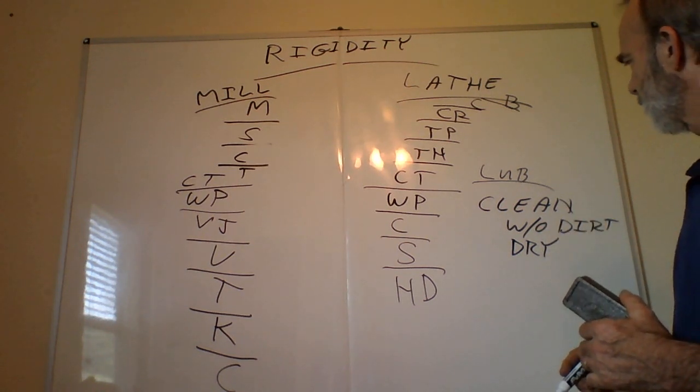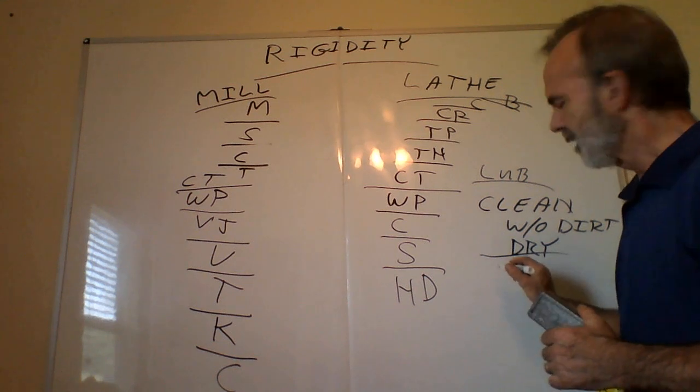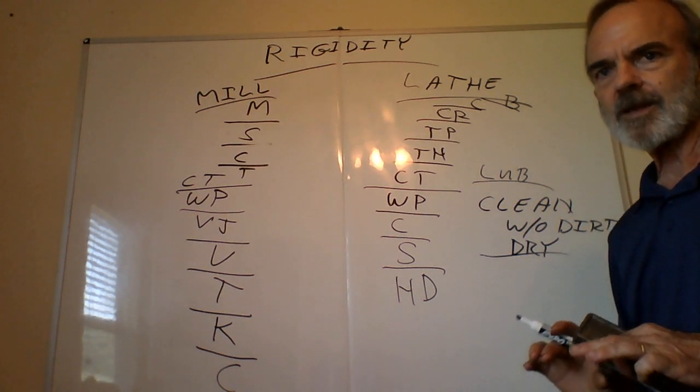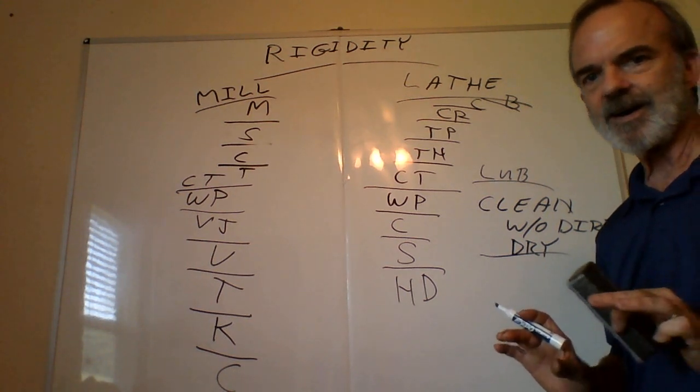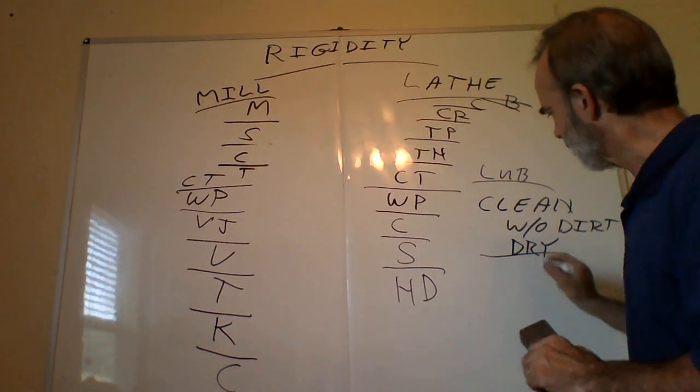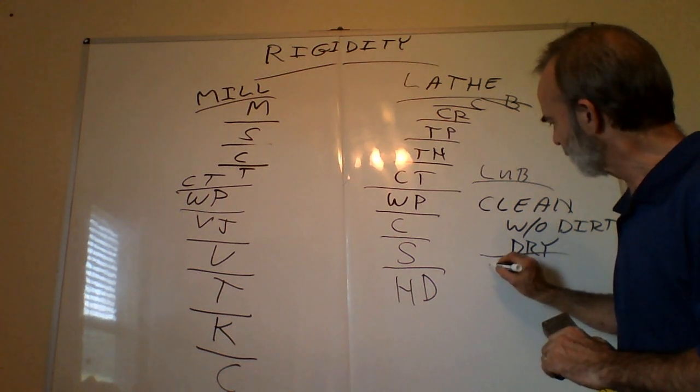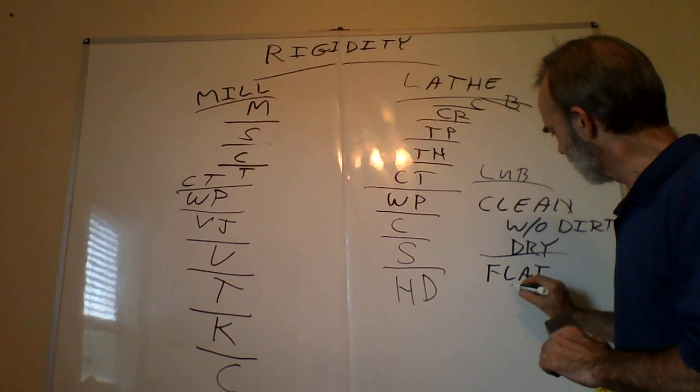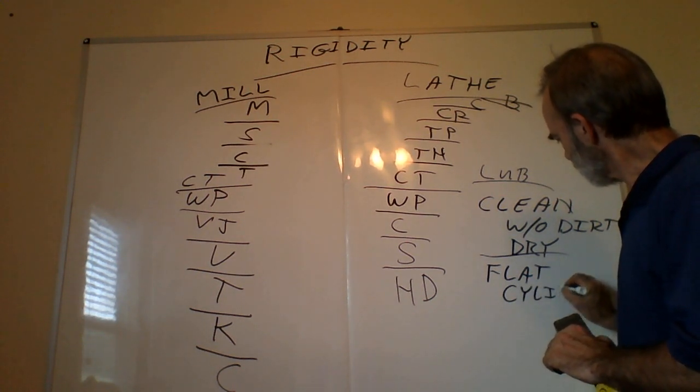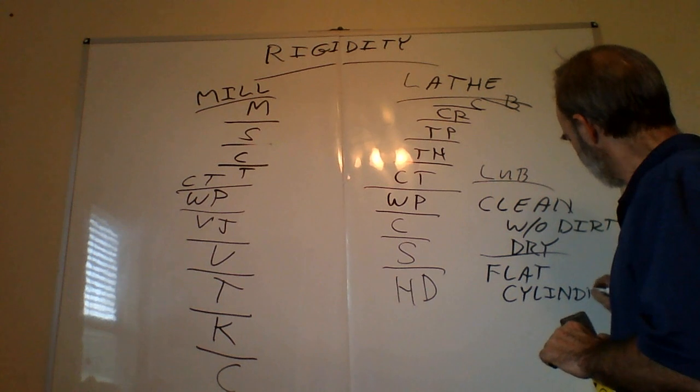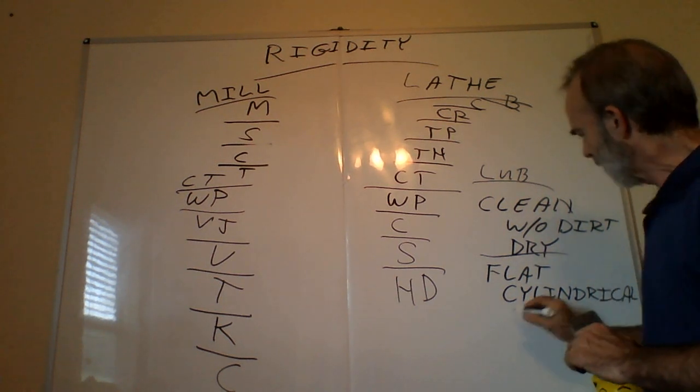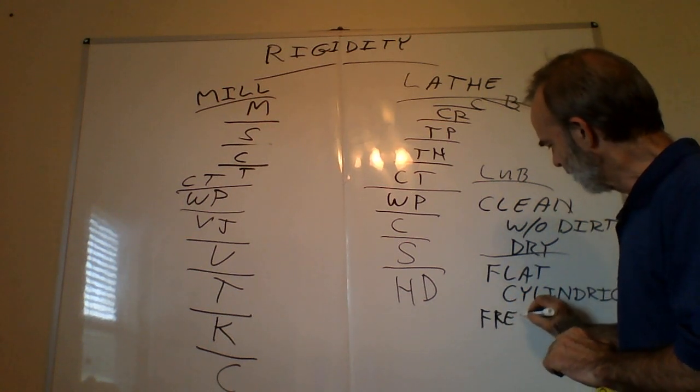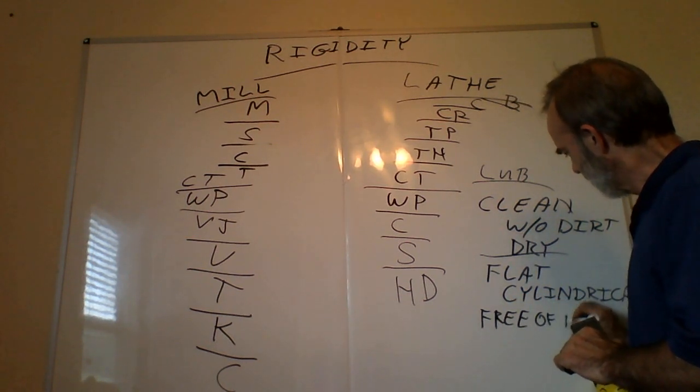You want things to be lubed, you want things to be without dirt and dry. And then you also want things to be flat, cylindrical, straight, without dings. I don't know exactly how to describe this but basically I'll just say free of dings.